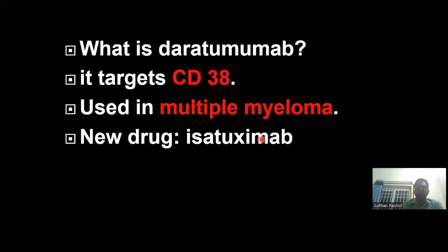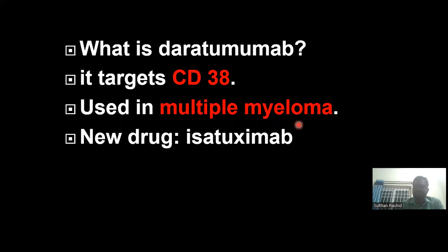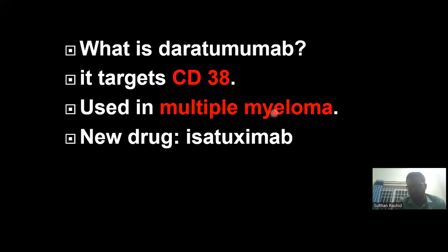Now comes daratumumab. It is a monoclonal antibody that targets CD38 and is used in multiple myeloma, which is a plasma cell neoplasm — a cancer arising from the bone marrow. A newer drug that also acts against CD38 and is used in multiple myeloma is isatuximab.